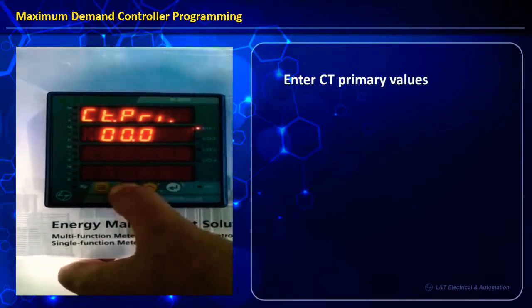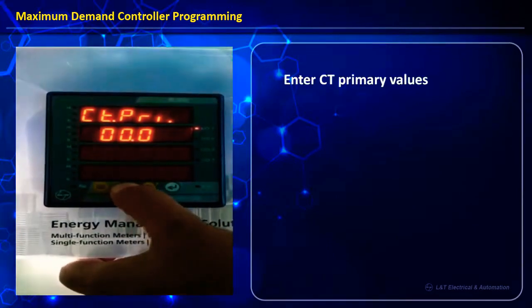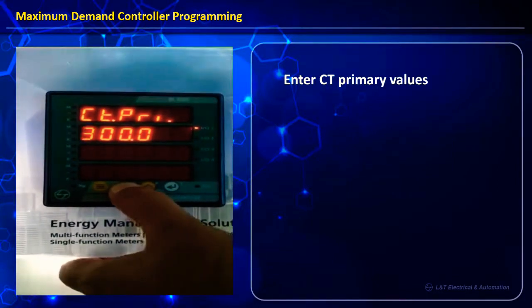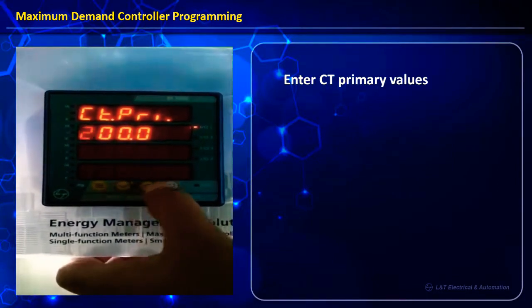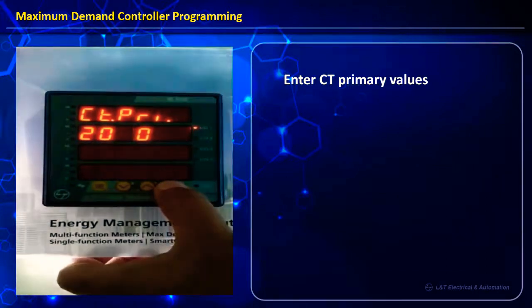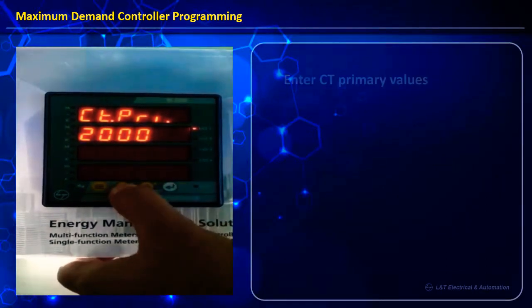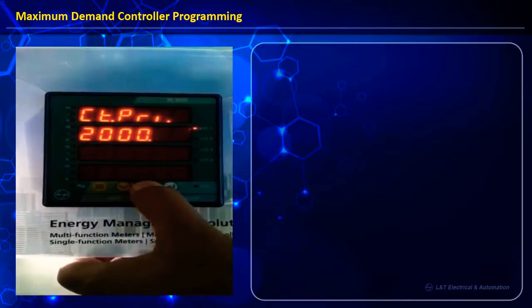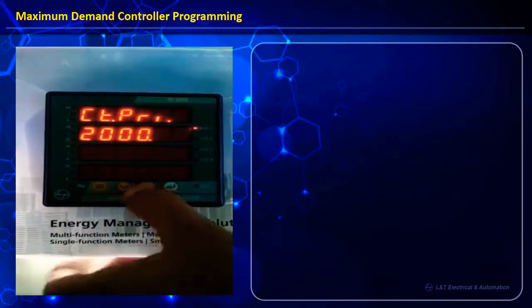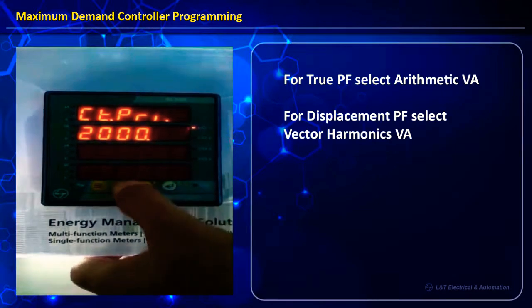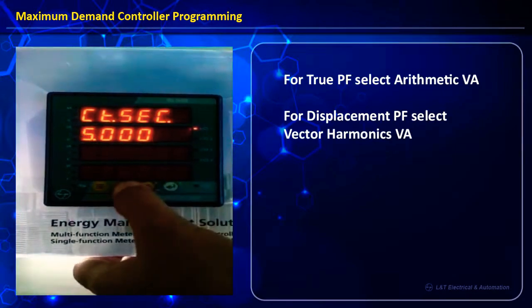Next we have CT primary, which we will change to 2000/5 — so we feed in 2000 as CT primary by choosing the appropriate decimal value without a K. CT secondary is 5.